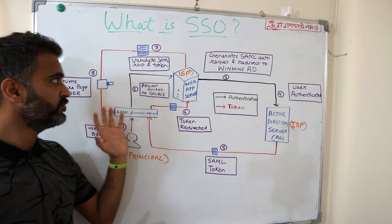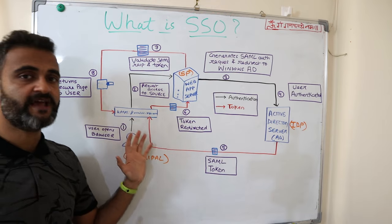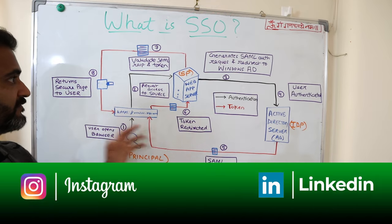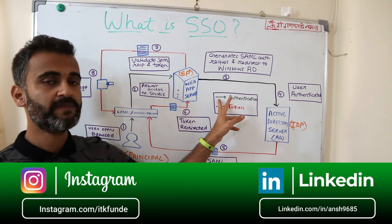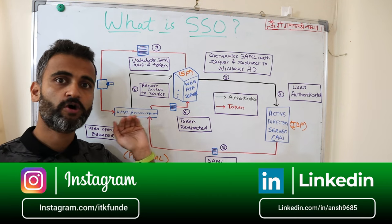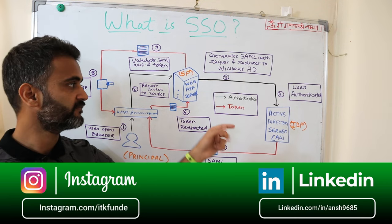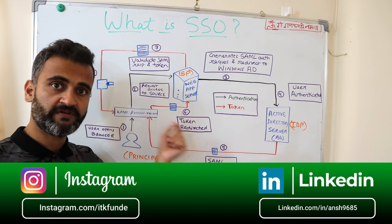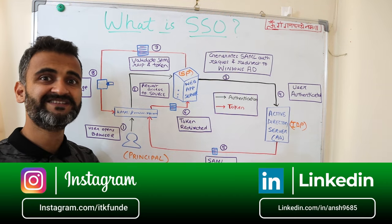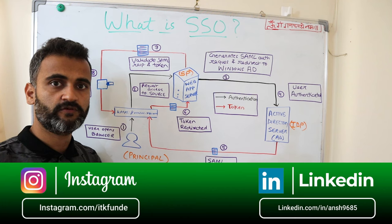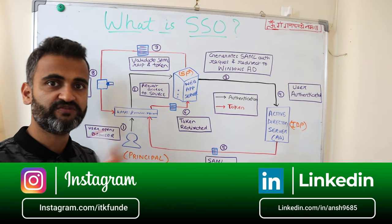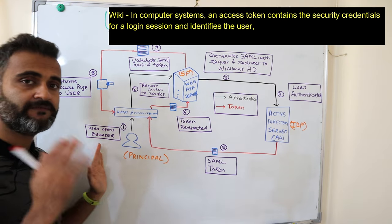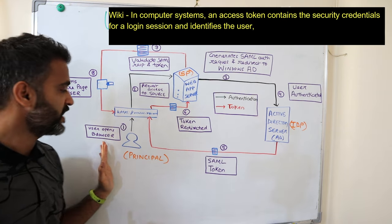In this workflow, you can see various arrows. Wherever you see the black arrow, this is the authentication workflow. And wherever you see the red arrow, this is the token workflow — once the token has been assigned. So we'll start with step one.